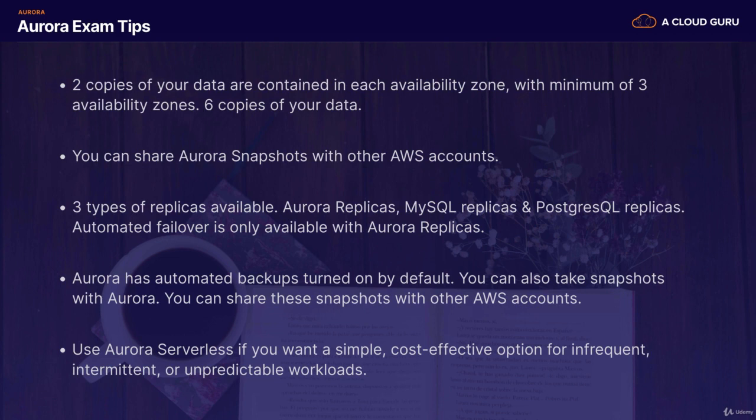Aurora exam tips: remember that you've got two copies of your data contained in each availability zone with a minimum of three availability zones, so two times three means you've got six copies of your data. You can share Aurora snapshots with other AWS accounts. You get three different types of replicas available: Aurora read replicas (15 you can have), MySQL (five you can have), and PostgreSQL (one). Remember that automated failover is only available with Amazon Aurora replicas.